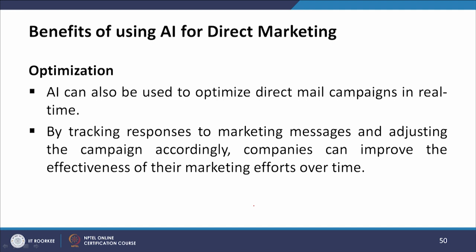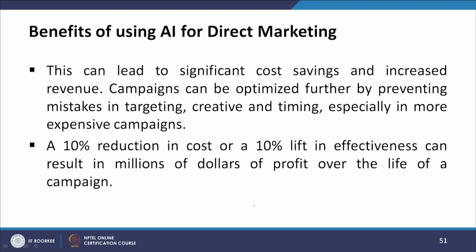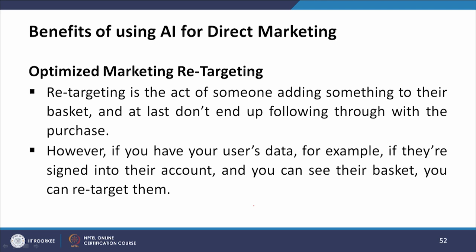Another benefit is optimization. AI can be used to optimize direct mail campaigns in real time. By tracking responses to marketing messages and adjusting the campaigns accordingly, companies can improve the effectiveness of their marketing efforts over time, leading to significant cost savings and increased revenues. Campaigns can be optimized further by preventing mistakes in targeting, creative, and timing, especially in more expensive campaigns. A 10 percent reduction in cost or a 10 percent lift in effectiveness can result in millions of dollars of profits over the life of a campaign.